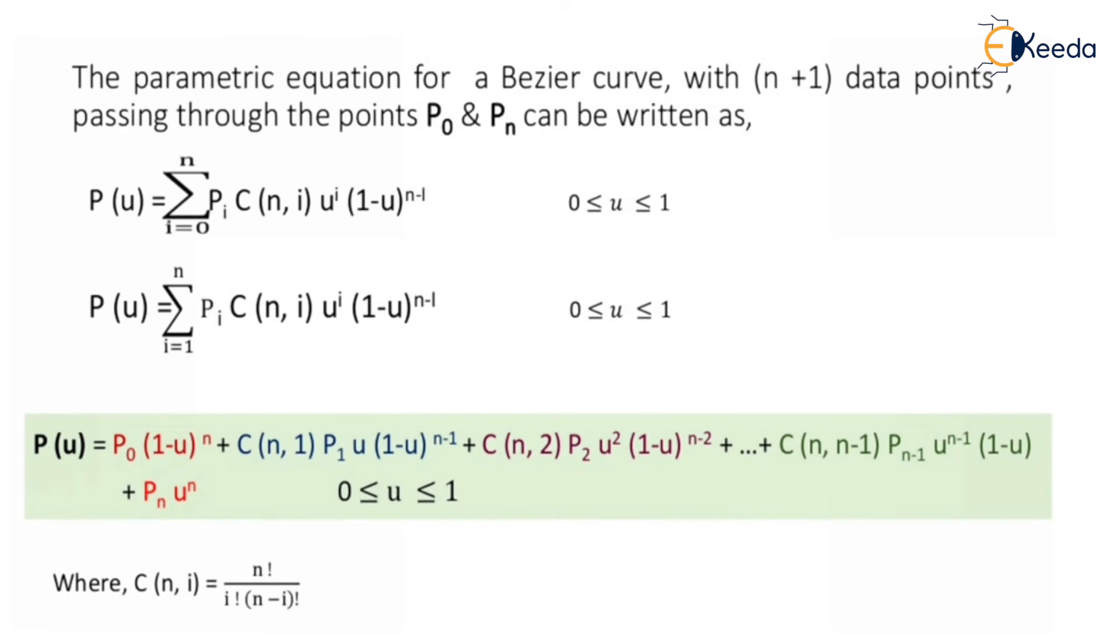The parametric equation for a Bezier curve, with n plus 1 data points passing through the points P0 and Pn, can be written as: P(u) equals summation i equals 0 to n, Pi C(n, i) u raised to i times (1 minus u) raised to n minus i, where 0 ≤ u ≤ 1.